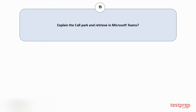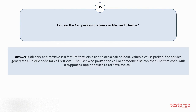Question number 15: Explain call park and retrieve in Microsoft Teams. Call park and retrieve is a feature that lets a user place a call on hold. When a call is parked, the service generates a unique code for call retrieval. The user who parked the call or someone else can then use that code with a supported app or device to retrieve the call. For more such videos, subscribe to our channel.